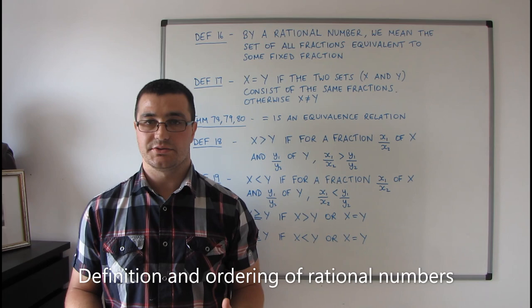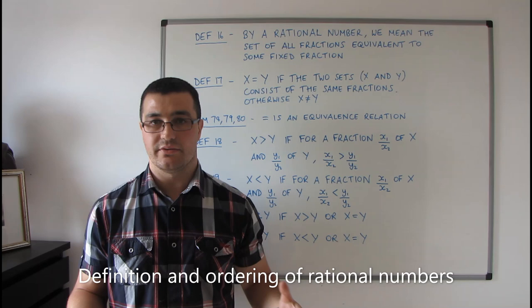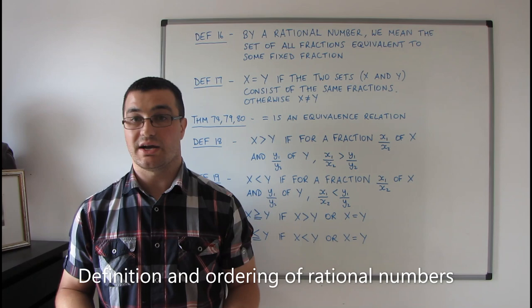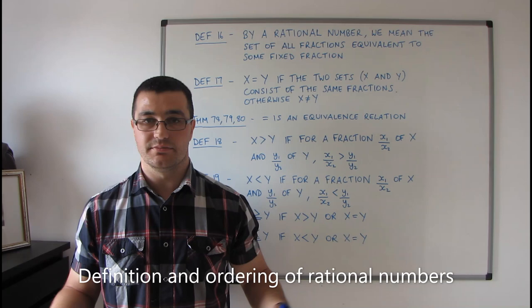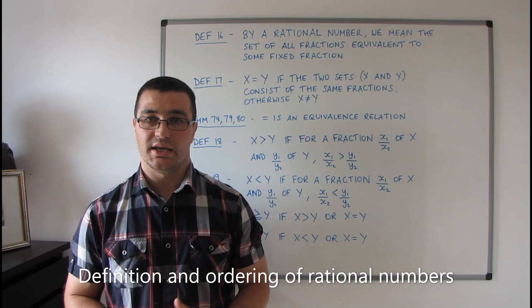In the last video on Edmund Landau's foundations of analysis, I covered the section on fractions. What I'm going to go through in this video is rational numbers, which in Landau's book actually forms part of the section on fractions. Fractions and rational numbers are lumped together in a single section, but I'm treating them separately, so I'm going to concentrate on rational numbers in this video.